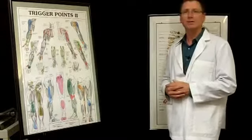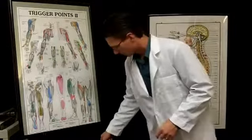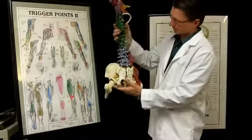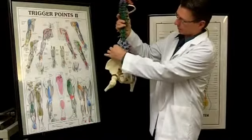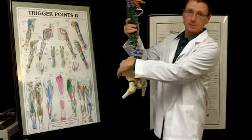With sciatic nerve pain, sciatic nerve pain comes from the spine. We have a nice diagram here. The areas that we're talking about are the fourth lumbar, fifth lumbar, and first and second sacral nerve roots.